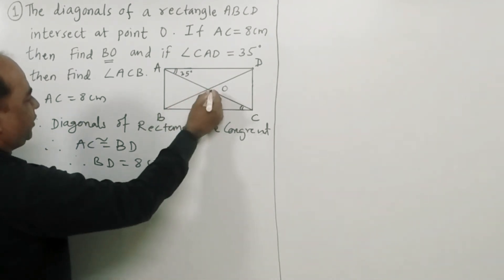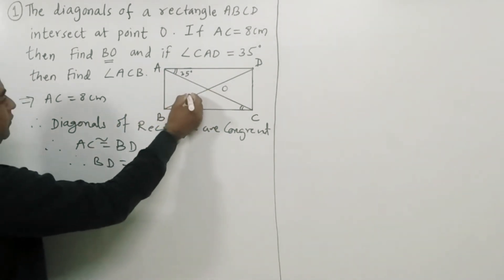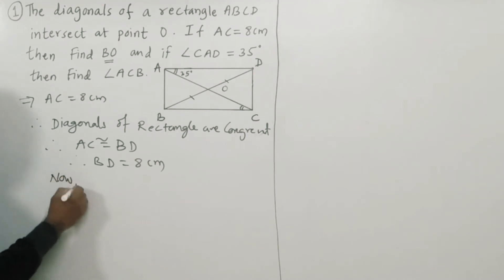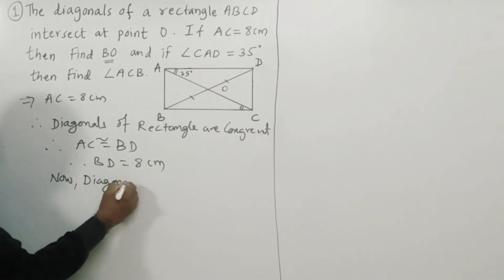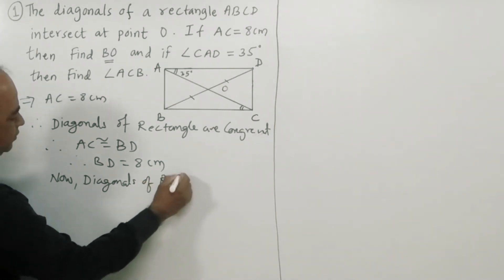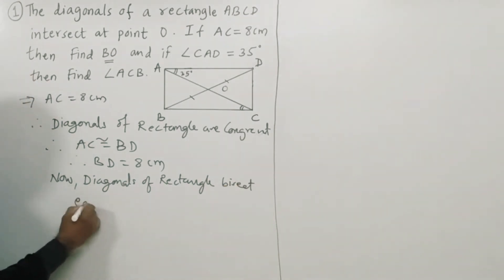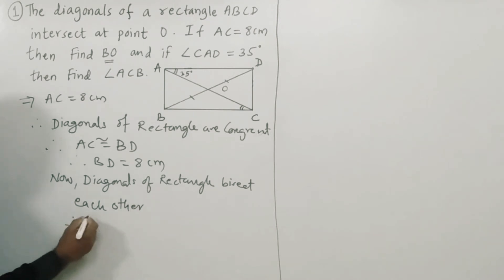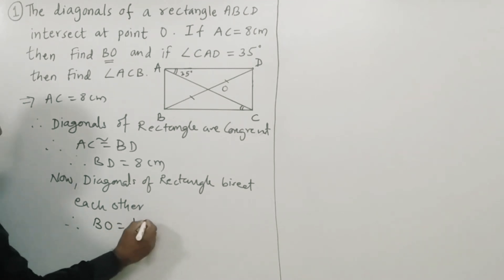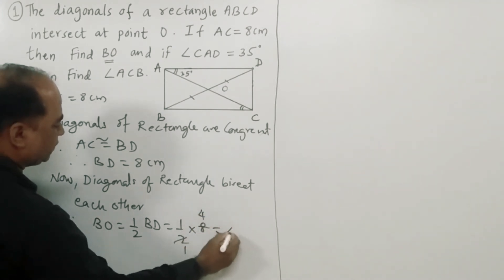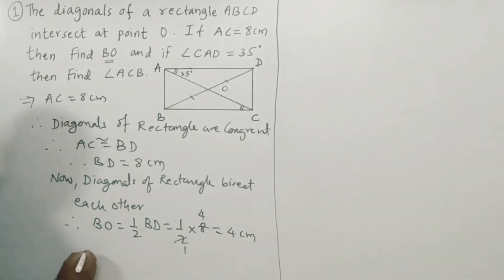Here we have to find DO. Now, by property, diagonals of a rectangle bisect each other. Therefore BO is equal to 1/2 of BD, which is 1/2 into 8, which is 4cm. So BO is equal to 4cm.